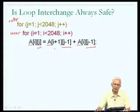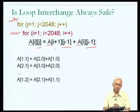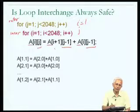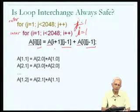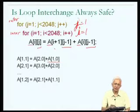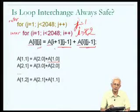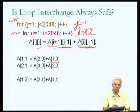The first time through this loop, J=1 and I=1. Therefore, A[I+1][J-1] = A[2][0] and A[I][J-1] = A[1][0]. We are adding A[2][0] to A[1][0] to make the new value of A[1][1]. The second time through, J is still 1 but I=2, so A[3][0] is added to A[2][0] to become the new value of A[2][1]. This is what happens across iterations of this doubly nested loop.